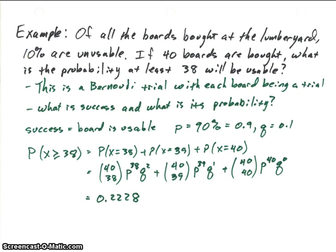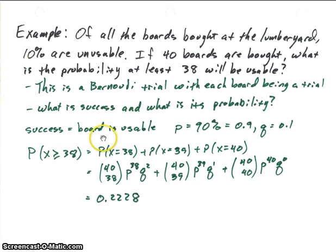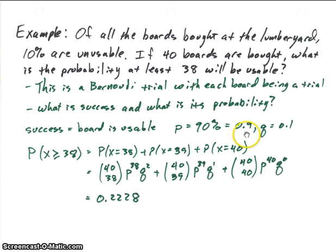The other thing to identify is: what is a success, and what is its probability? The problem asks what is the probability that at least 38 will be usable, so we'll say usable is a success. The probability of it being usable is 90%, since we're told 10% are unusable. So p equals 0.9 and q equals 0.1.